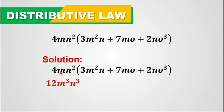And then 4mn squared times 7mo: 4 times 7 is 28. And m times m is m squared, and n squared times o is n squared o.